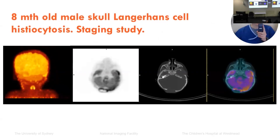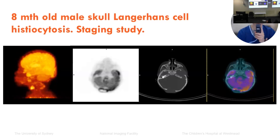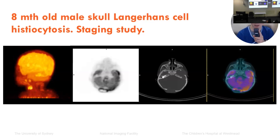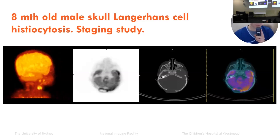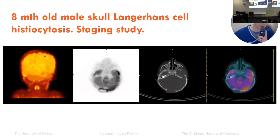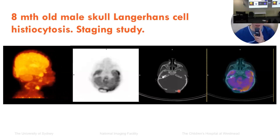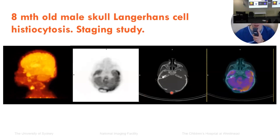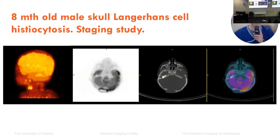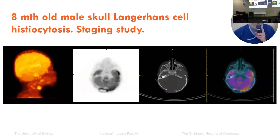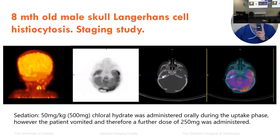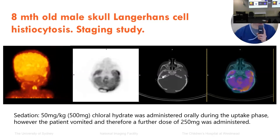The first patient is an eight-month-old male with biopsy-proven Langerhans cell histiocytosis, and a staging FDG PET-CT was performed. The rotating MIP image on the left shows focal uptake at multiple sites peripherally in the calvarium, with axial views localised to lytic lesions at multiple sites confirming polyostotic disease. For this patient, the issue was not the scan findings per se, but what was required to achieve a good quality scan of this nature.